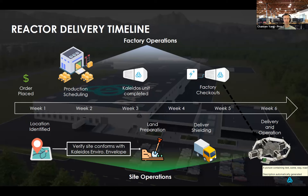The six-week deployment timeline works as follows: week one — order placed, production scheduled, Kaleidos unit identified; week three — Kaleidos unit complete; weeks four and five — factory checkouts, fuel loading, zero power criticality testing, and buttoning it up for transport. On the bottom are site operations occurring in parallel: location identified, verifying the site conforms with the Kaleidos environmental envelope, minimal land preparation — potentially pouring concrete, setting up a fence, delivering shielding — and then week six: delivery and operation.